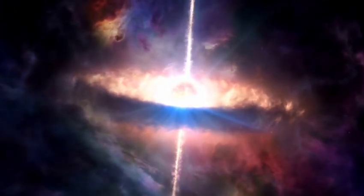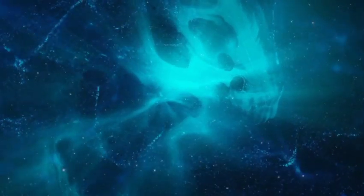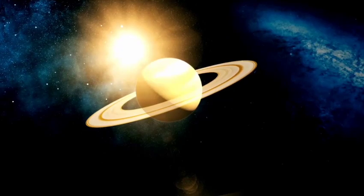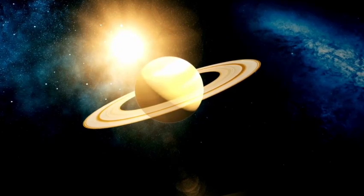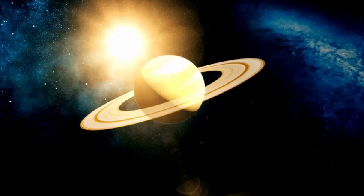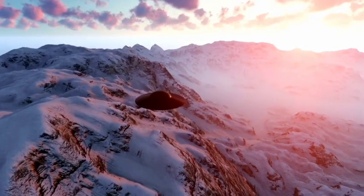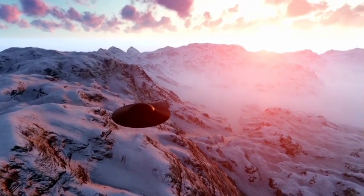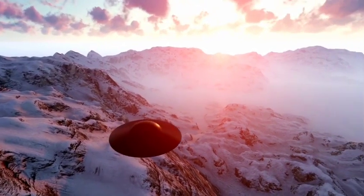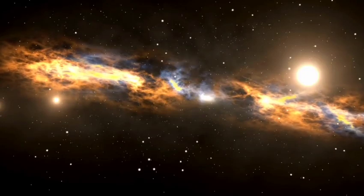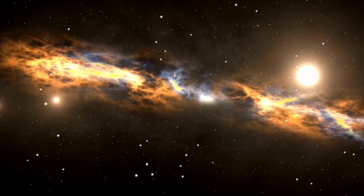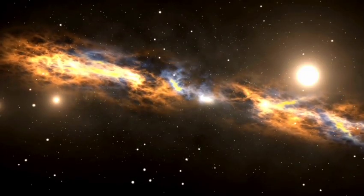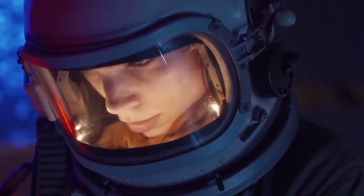Beyond TRAPPIST-1, astronomers are looking at another category of exoplanets: super-Earths. These planets, which are larger than Earth but smaller than Neptune, may have thick atmospheres that help regulate temperature and protect against stellar radiation. One such world, LHS-1140b, is a rocky super-Earth located 48 light years away. It orbits within its star's habitable zone and is believed to have retained a significant atmosphere, making it a strong candidate for further study.